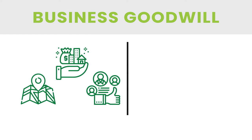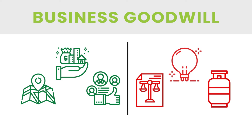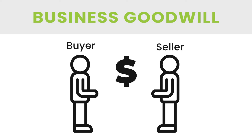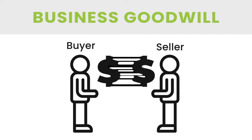Assets are the line items a business owns that have a positive value to the business. Meanwhile, liabilities are line items of a business that have a negative value to the business. Fair market value is the price agreed to between a knowledgeable and willing buyer and a knowledgeable willing seller. In many cases, fair market value of an item may change over time.